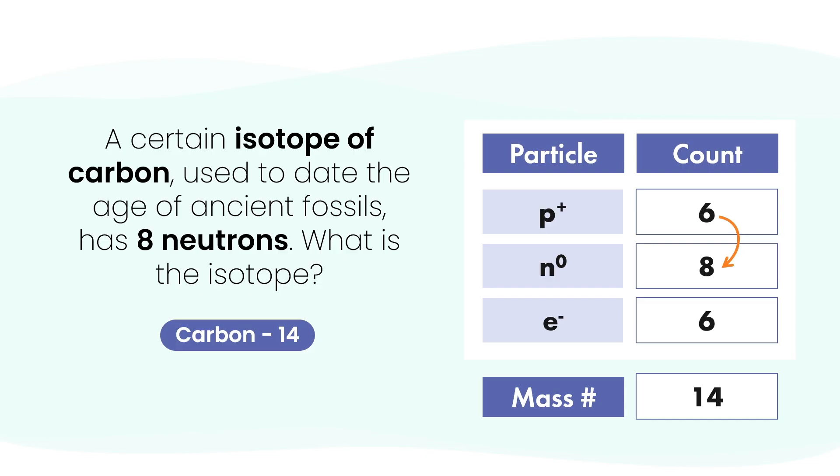So this isotope is called carbon-14, and this style of naming is called the hyphen notation. In nuclear notation, we can also write it like this: carbon-14, just the mass number and the element symbol. Notice how the atomic number, the 6, isn't shown here. That's totally fine because we already know from the periodic table that carbon always has 6 protons.